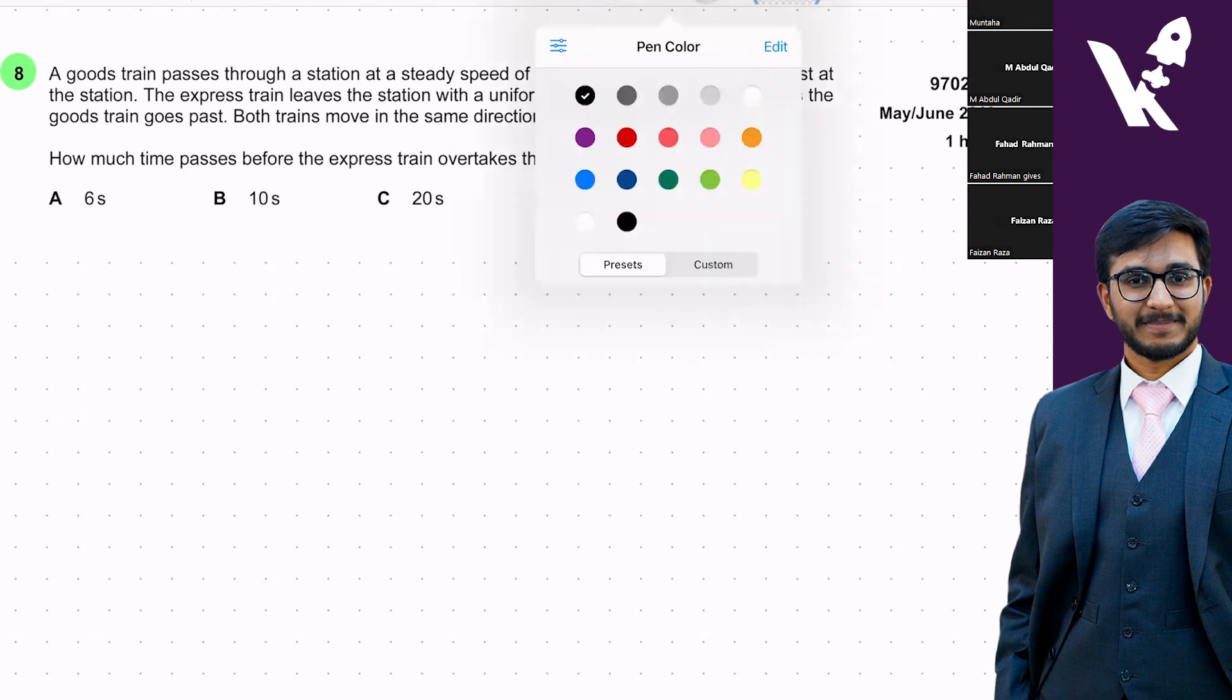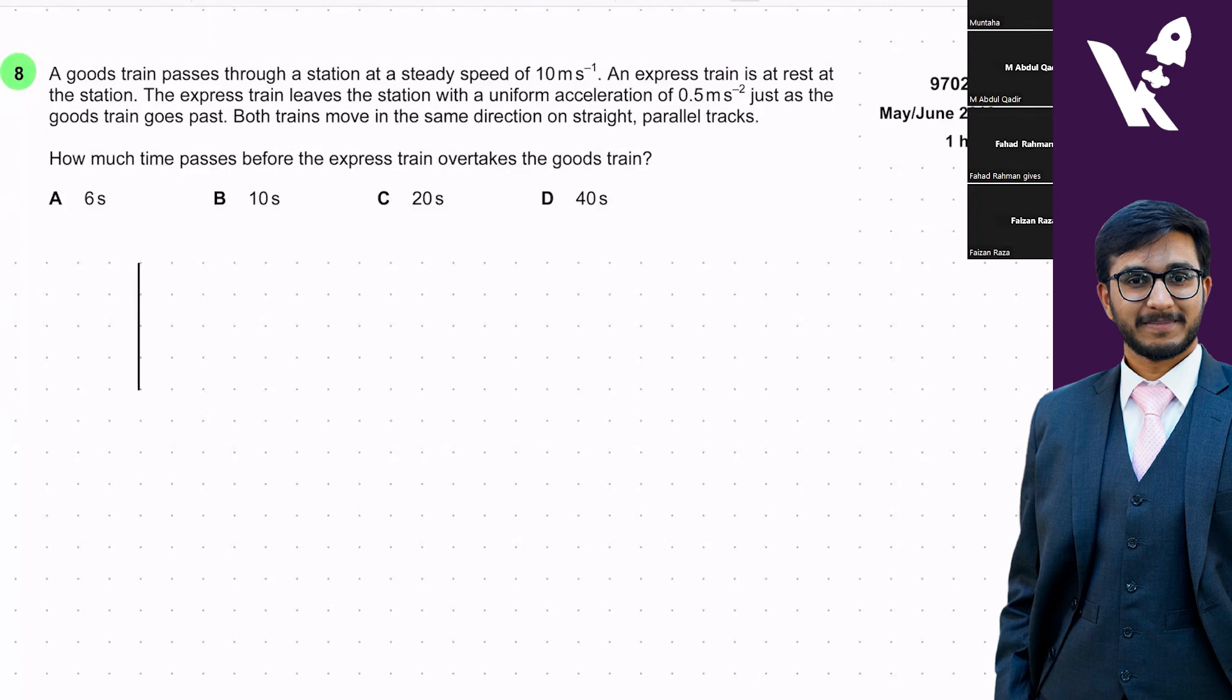Let me draw the diagram of this first so that you know what we are actually doing. Consider this as your station. We've got two trains, the goods train and the express train. This is your goods train and this is the express train.